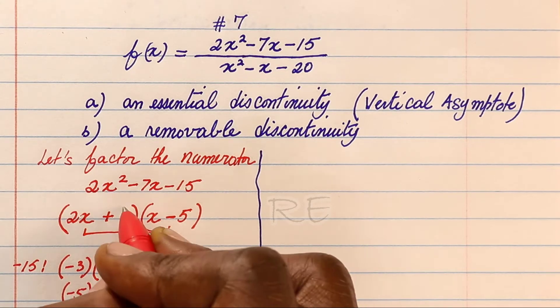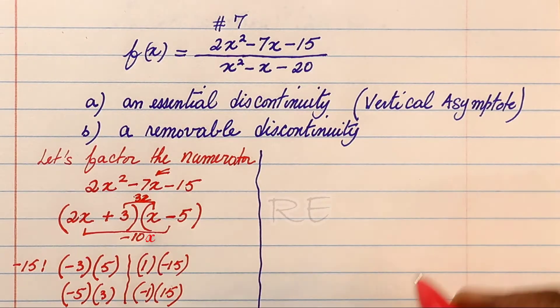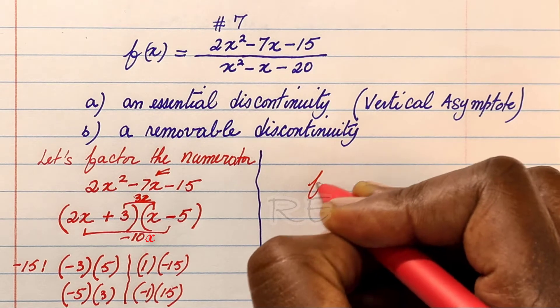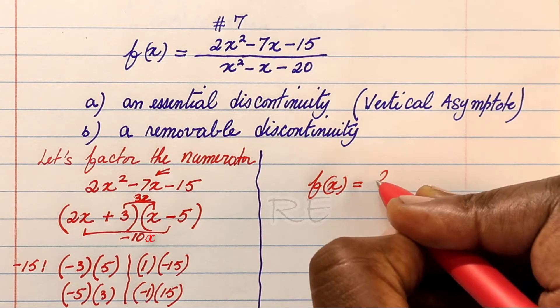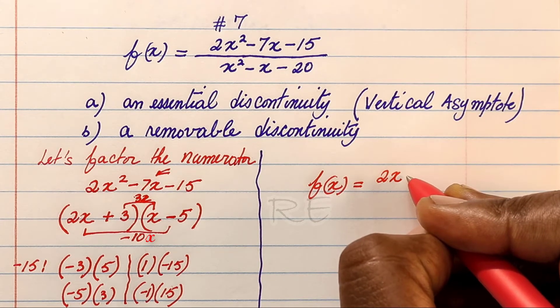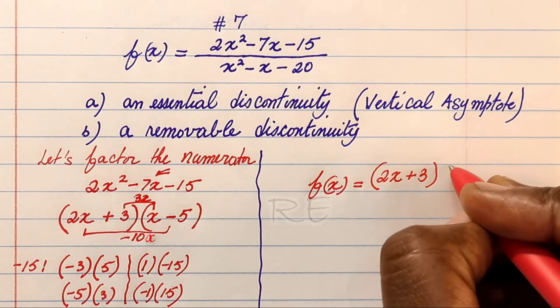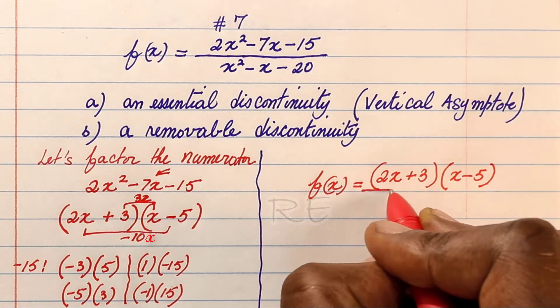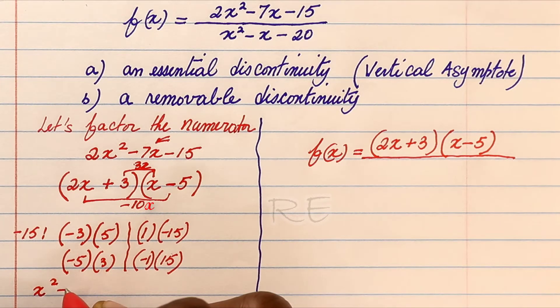2x times negative 5 is negative 10x. 3 times x is 3x, and the sum is negative 7. So in factored form, the numerator is 2x plus 3 times x minus 5 divided by x squared minus x minus 20.